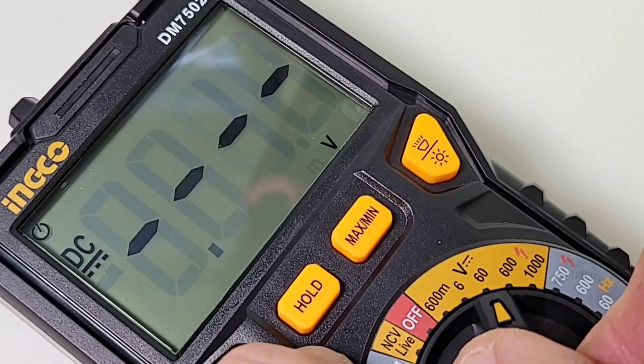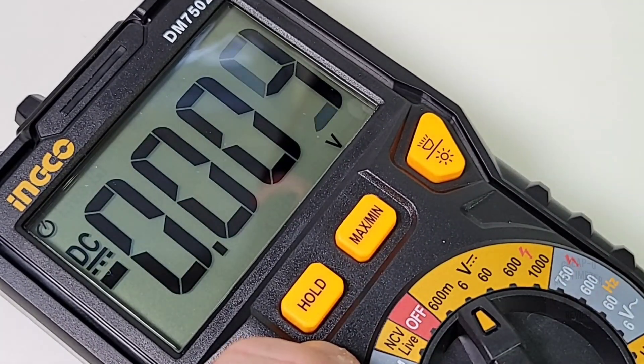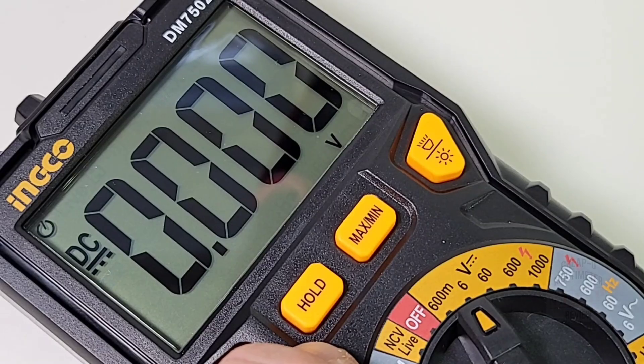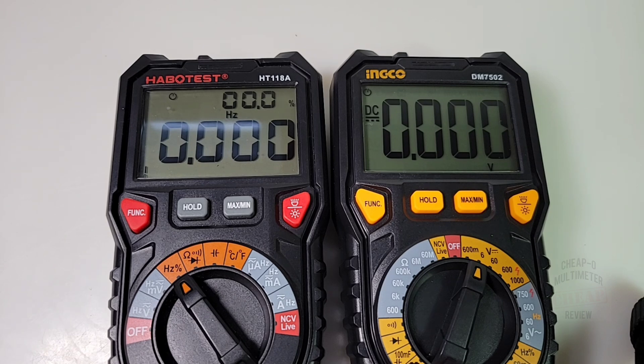Selector switch as well. Has a nice tactile feel. Clackity clack, clickity click. Hits the ranges with authority. I like it. Backlight is also slightly different on the Inco compared to the Habotest. A little bit brighter. I don't know if it's necessarily better, but it does seem to last as well a few seconds longer, but not by much.